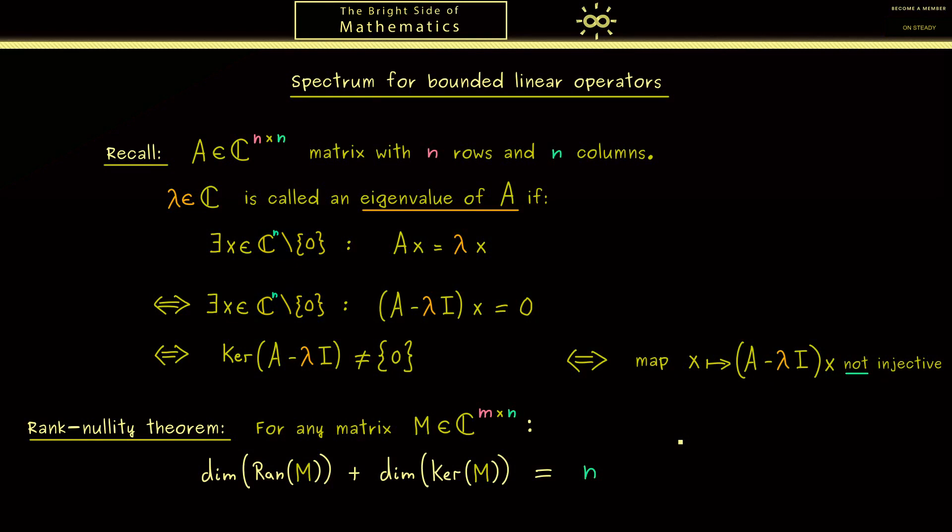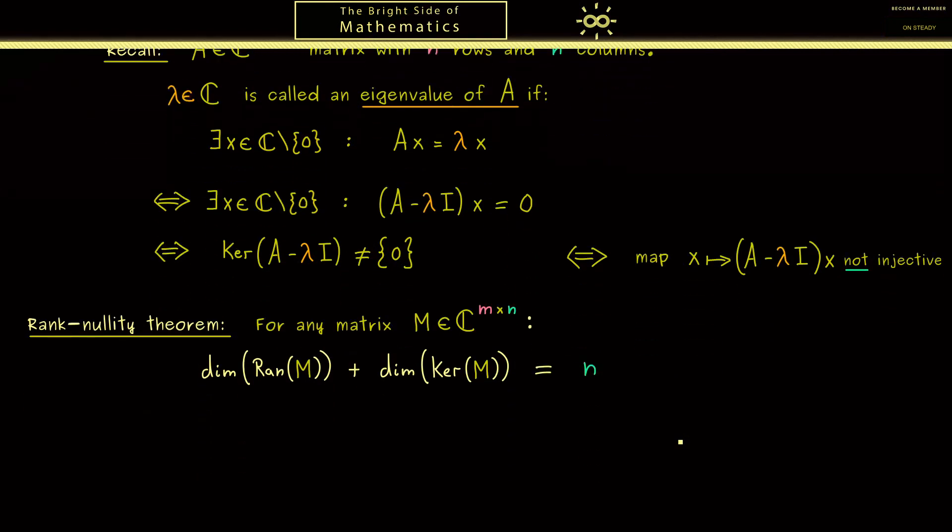However, if we leave the finite-dimensional case, this rank-nullity theorem will not hold anymore. For this reason we immediately get different possibilities for which the invertibility of this map can fail.